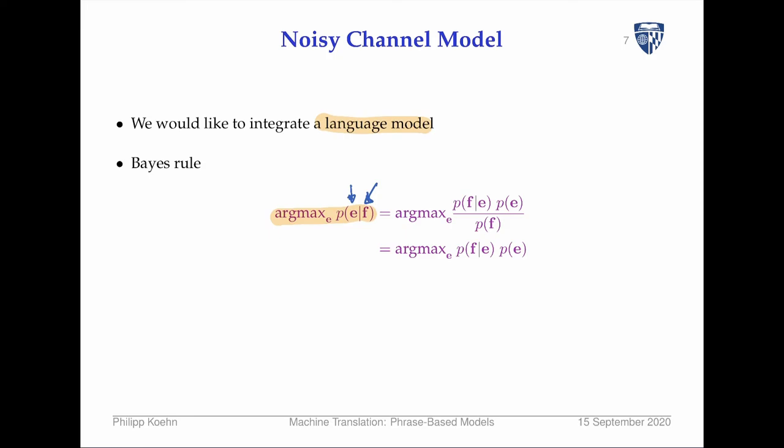We apply Bayes' rule, which reformulates P(e|f) into P(f|e) × P(e). One thing we can do to simplify: because we're maximizing over e and f is always given, the probability of f doesn't play a role when finding the maximum e, since the only thing we vary is e. So we can drop it out when taking the argmax.